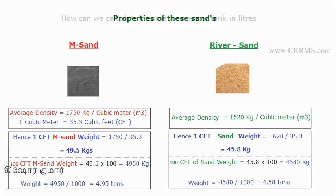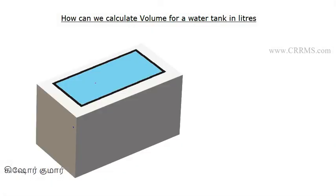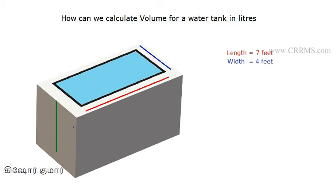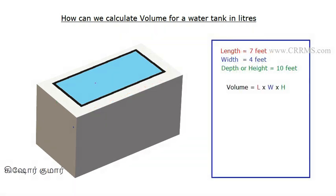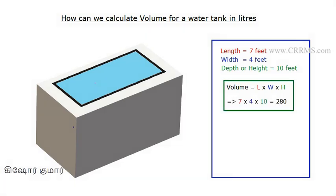Now we'll calculate the volume of a water sump or tank for more clarity. This formula works only for even shapes like rectangular or square. Let's consider a container or water sump with a length of 7 feet, width of 4 feet, and depth of 10 feet. Volume equals length × width × height: 7 × 4 × 10 equals 280 cubic feet — this is the actual volume of this container.